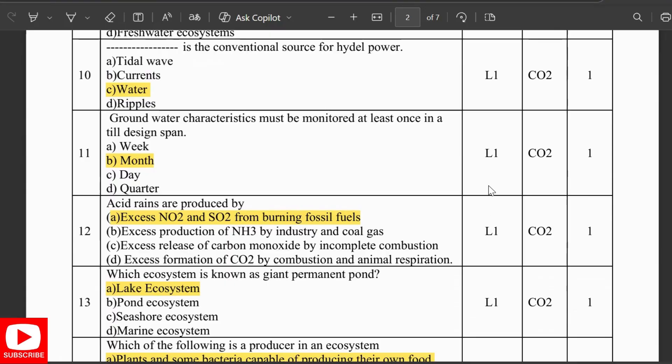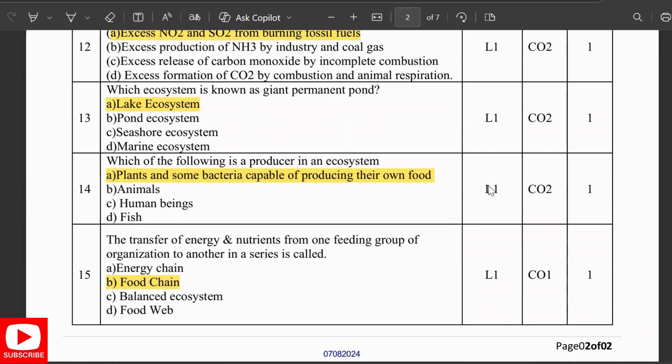Water is the conventional source for hydel power. Groundwater characteristics must be monitored at least once in a month. Acid rains are produced by excess NO2 and SO2 from burning fossil fuels. Which ecosystem is known as the gained permanent pond? It is lake ecosystem.